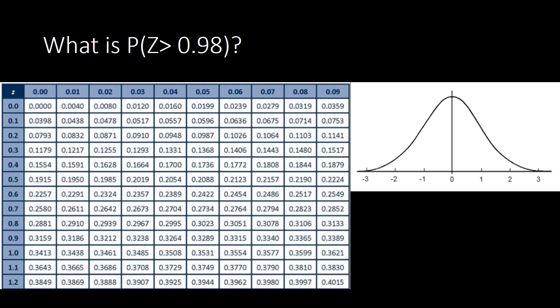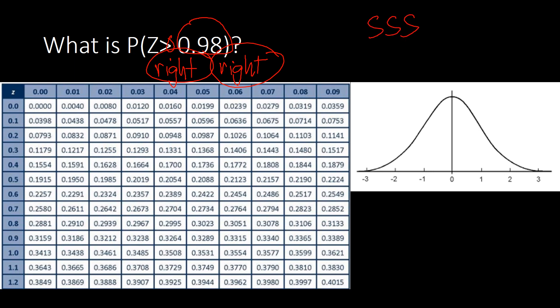Moving on to the next problem: what is P(z > 0.98)? We have 'greater than,' so by looking at the symbol the tail points right — the shading direction is right. The z-score is positive, so it is located on the right side as well. Right and right — that is the same side, so we subtract (SSS: same side subtract).